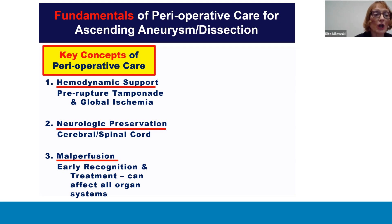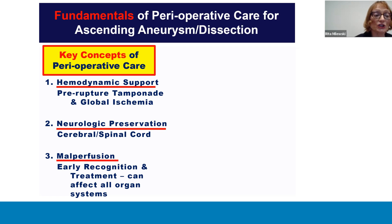Number two: neurologic preservation of the brain and spinal cord. And number three: malperfusion. Both early recognition and treatment are essential. These three critical concepts will be highlighted throughout this session in the preoperative, operative, and postoperative care of aortopathies and dissection in patients.